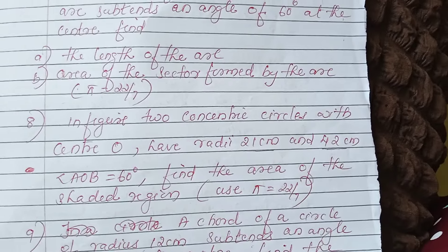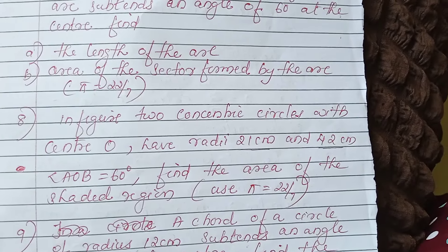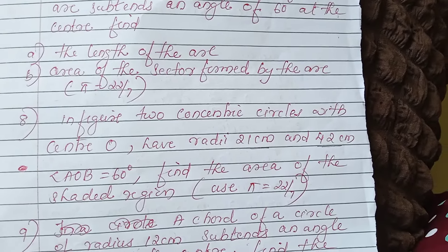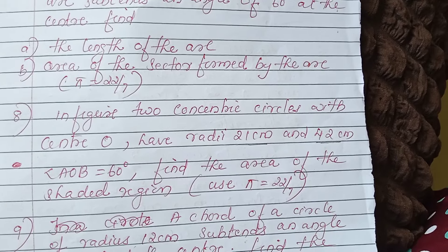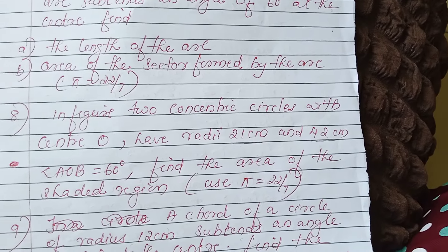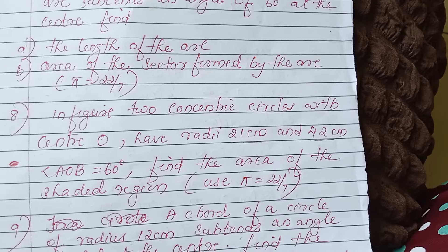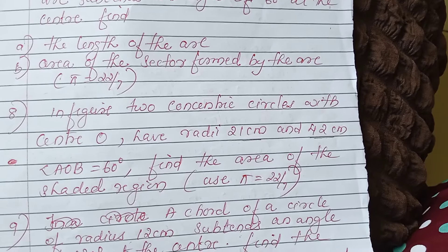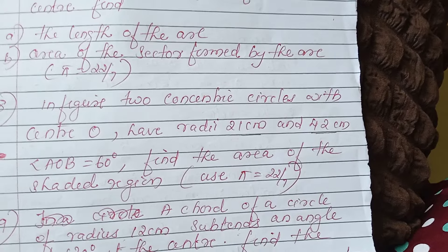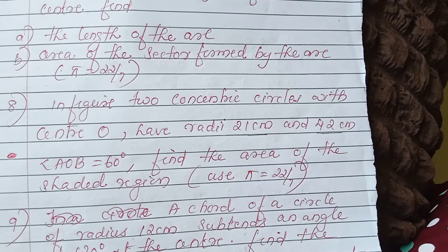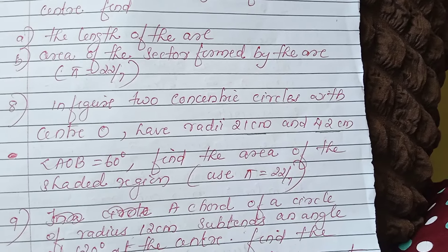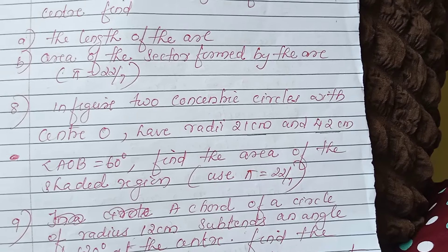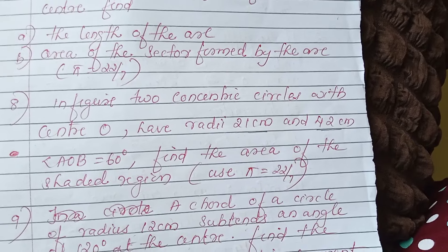Next question: in the figure, two concentric circles with center O are given. The radii are 21 cm and 42 cm. Angle AOP = 60 degrees. Find the area of the shaded region.